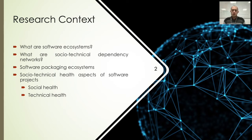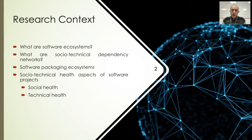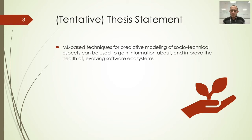As I mentioned, there are social aspects and technical aspects, and each one of these has different kinds of health problems. For example, the way developers are communicating with each other, or the technical health related to dependency problems, or problems that come from other packages having issues in their development. My tentative thesis statement is that using ML-based techniques for predictive modeling of socio-technical aspects can be used to gain information about and improve the health of evolving software ecosystems.